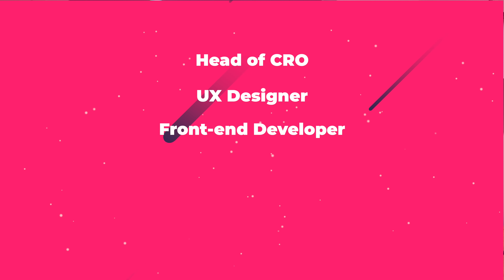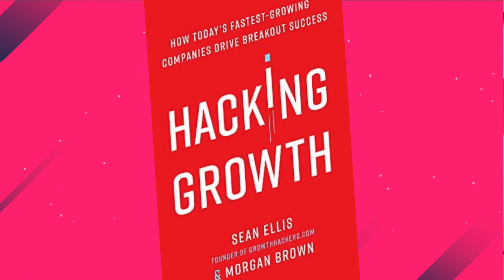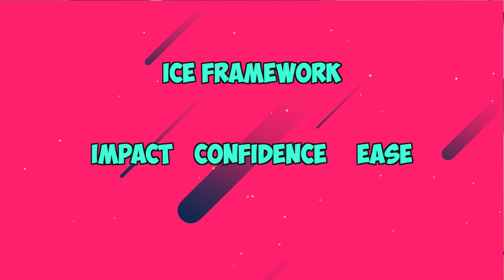When you're doing over two million dollars a year at great profits, you might really want to invest in your CRO team. One structure that we're looking at is a head of CRO, a UX designer, a front-end developer, a data analyst, and a direct response copywriter. The head of CRO runs the tests and the projects. If you're wondering what tests to run, I suggest the ICE framework — I first read about this in Hacking Growth by Morgan Brown and Sean Ellis. ICE stands for impact, confidence, and ease: impact is how much it will increase your conversion goal; confidence is how confident you are it will work; and ease is how difficult the implementation is.